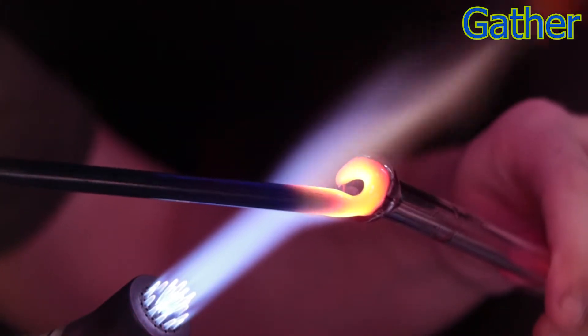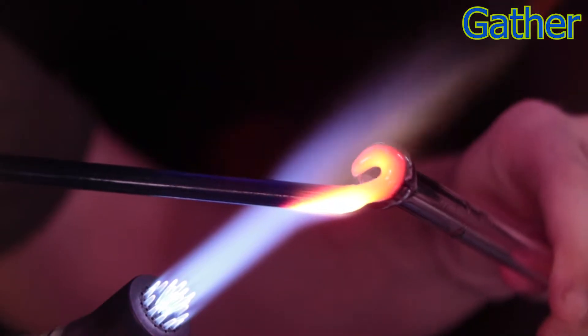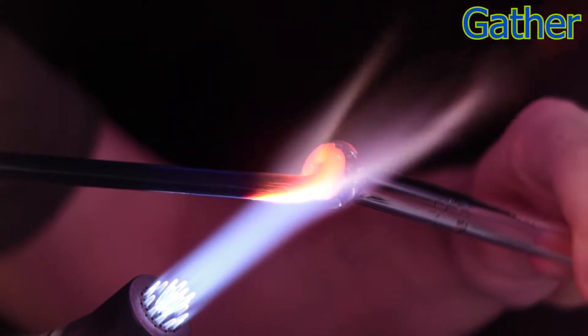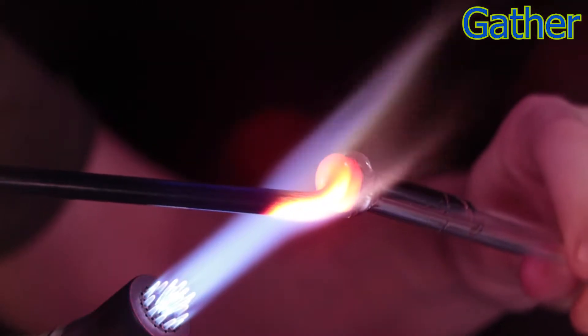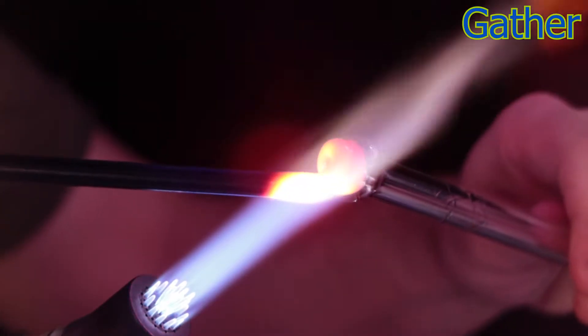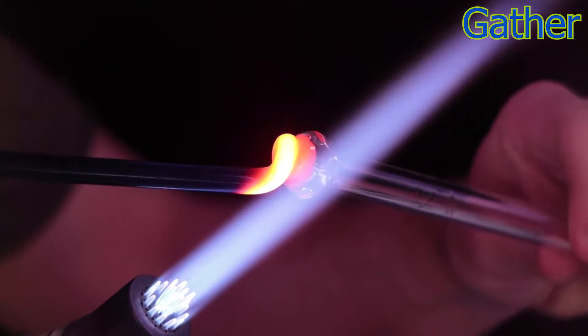And you'll notice I'm keeping the rod in the same place in the flame while I move the tubing around to apply the glass. That's because I need a nice even and consistent heat on that rod in order to melt it.